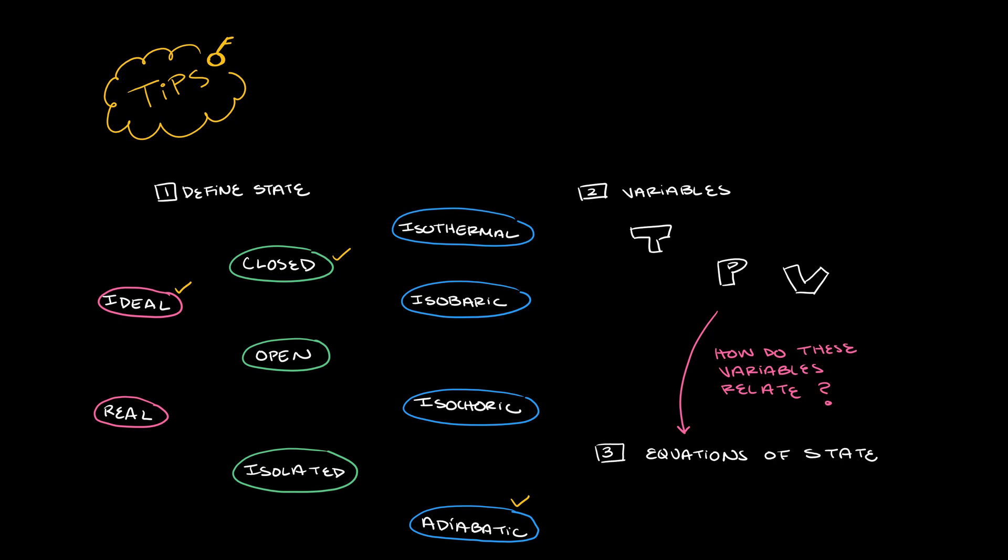Is it isothermal, isobaric, isochoric, which means constant volume, or adiabatic? Thermodynamics uses ideal systems as an approximation of real systems, since ideal systems are much easier to define.